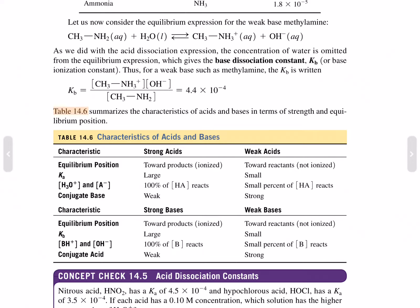The strong bases are towards the products, which are ionized. They have very large K sub B ionization constants, and 100% of the reactants react, and its conjugate acid is weak. Weak bases are towards the reactants. They're not ionized. Very small K sub B, and a very small percent of the reactant reacts, and its conjugate acid is strong.